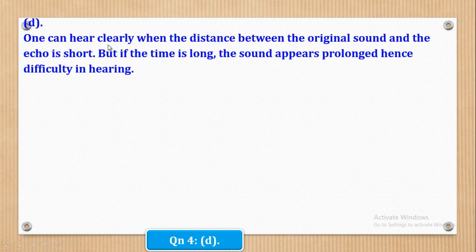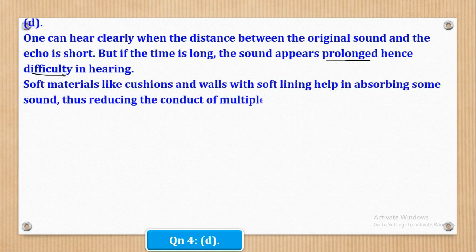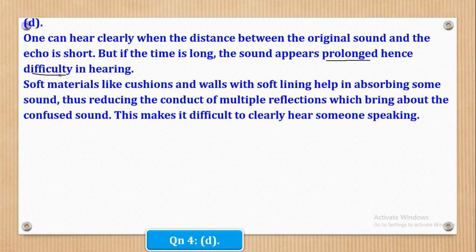One can hear clearly when the time between the original sound and the echo is short. But if the time is long, the sound appears prolonged, hence difficulty in hearing. Soft materials like cushions and walls with soft lining help in absorbing some of the sound, thus reducing multiple reflections which bring about confused sound. This makes it difficult to clearly hear someone speaking when there are no soft linings and the chairs are not cushioned.